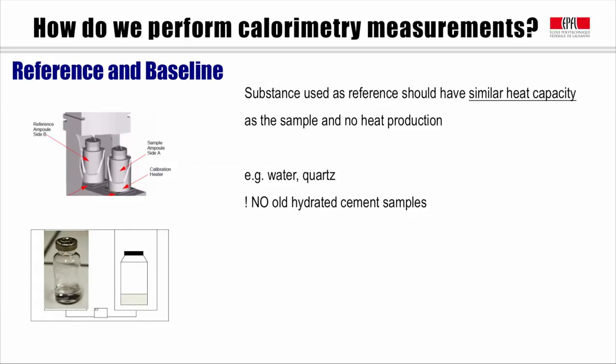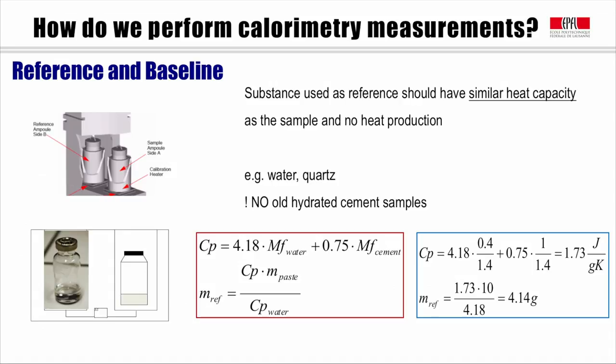To ensure a stable baseline and reduce background noise, the sample and reference ampoule should have the same thermal response. This is the rule for calculating the mass of the reference. Here is an example of calculating a reference for 10 grams of cement paste with water-to-cement ratio of 0.4. By knowing the specific heat capacity of water and cement powder, the mass of the reference can be calculated.